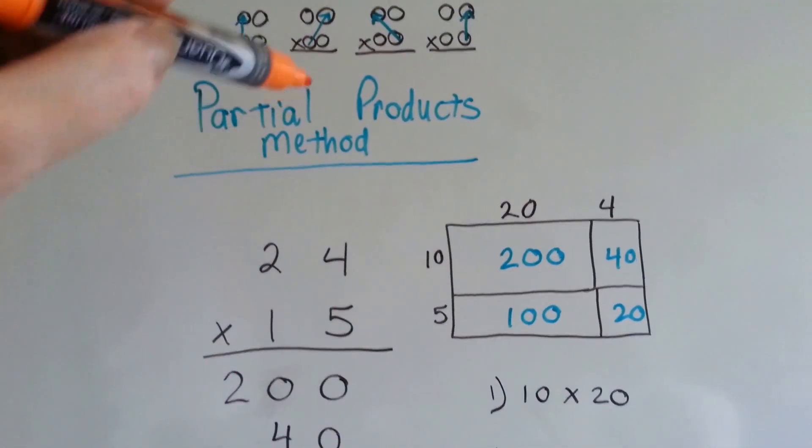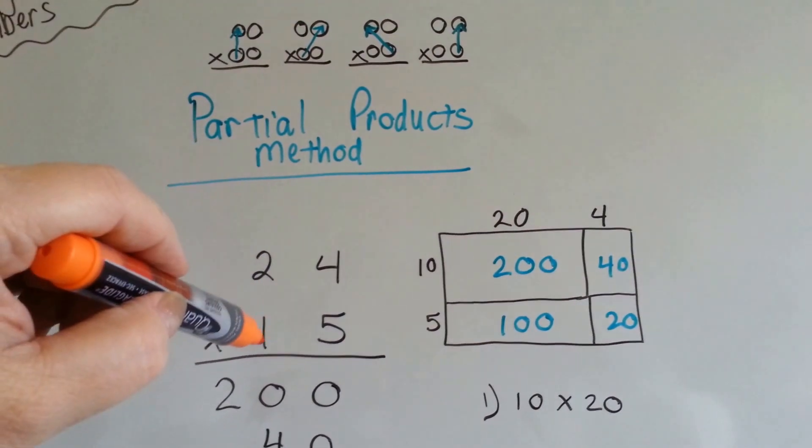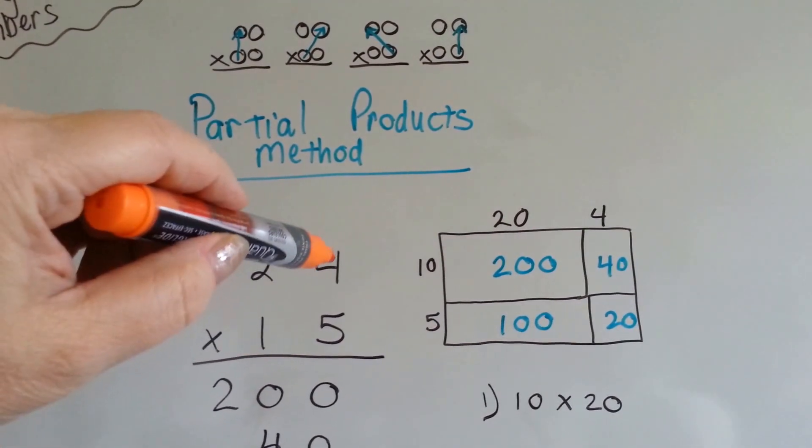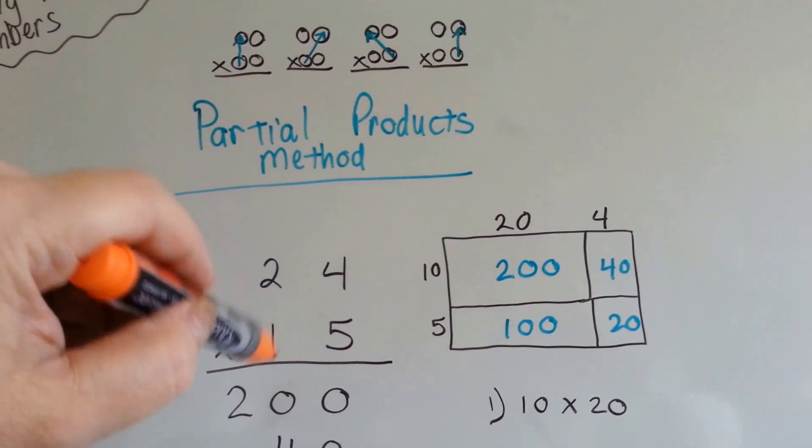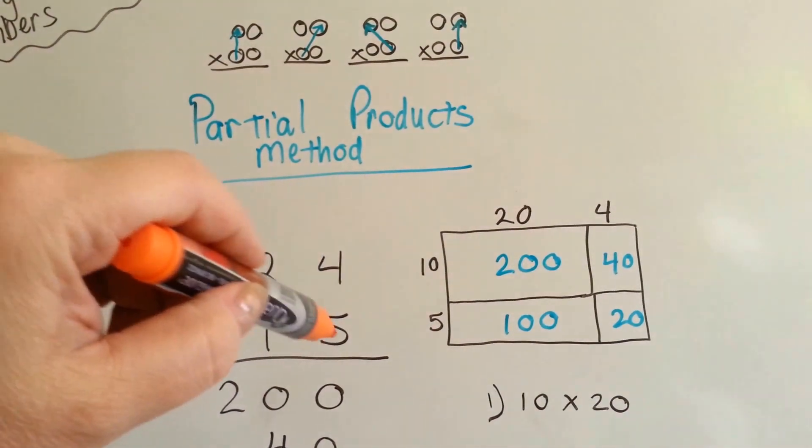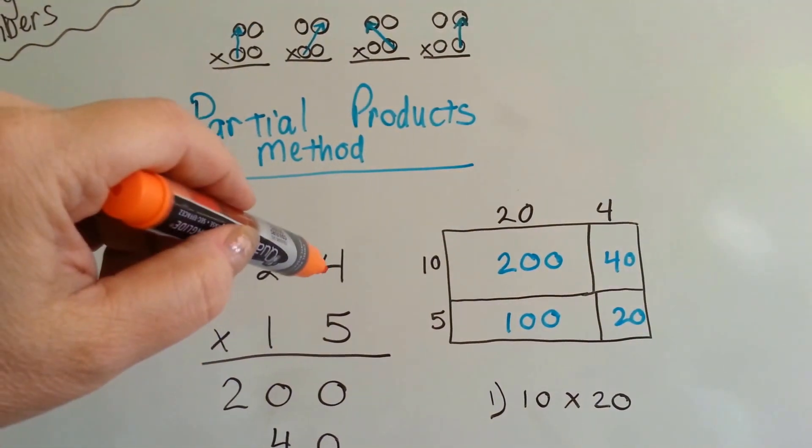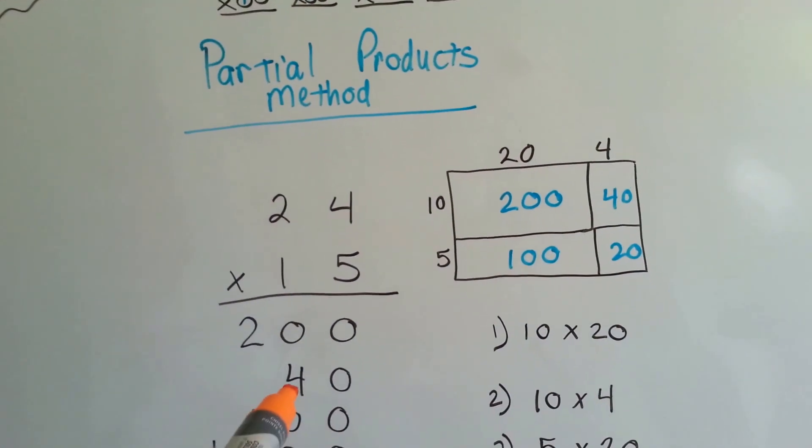The second thing we're going to do is multiply this 10 to this ones. This tens to this ones, so it's 10 times 4. Remember, this is a tens place, not just a 1. It's 10 and 5. So we've got one 10 and five ones, so 10 times 4 is right here, and it's 40. We just write our answer right here.